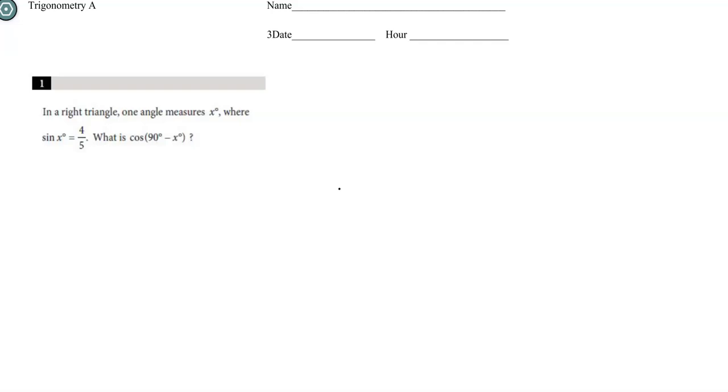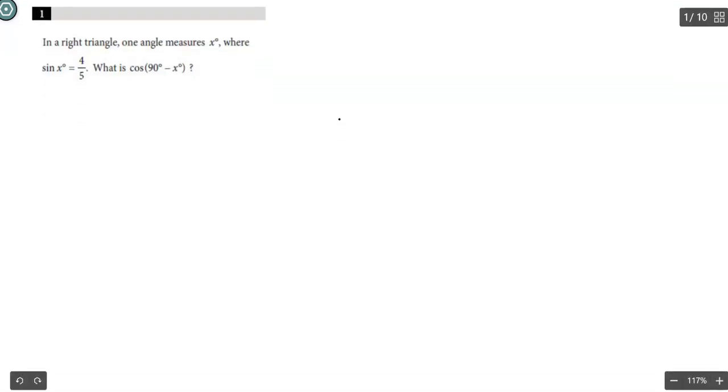Alright, trigonometry A. Let's take a look at the solutions to this worksheet. So number one, in a right triangle, one angle measures x where the sine of x is 4 over 5. What is the cosine of 90 minus x?